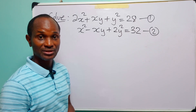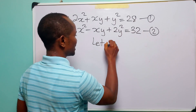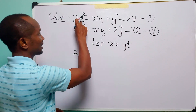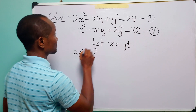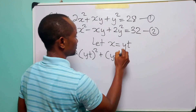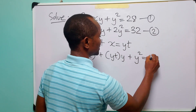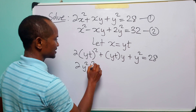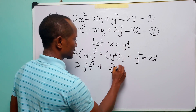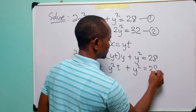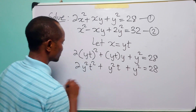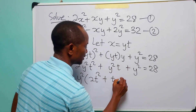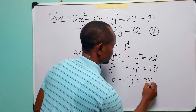To solve these two equations simultaneously, we make a substitution: let x be equal to yt. From the first equation we have that 2 times x, which becomes yt, squared, plus yt multiplied by y, plus y squared is equal to 28. Simplifying, we have 2y²t² plus y² plus y² equal to 28. Factorizing y² out, we have y² times (2t² + t + 1) is equal to 28.